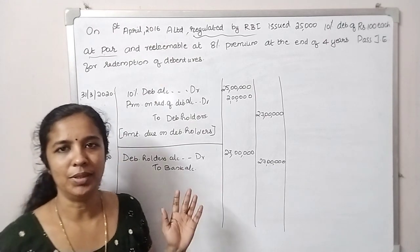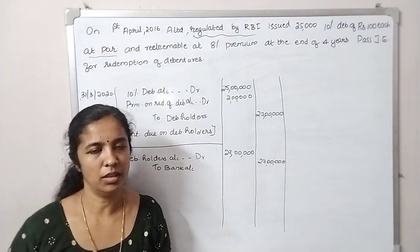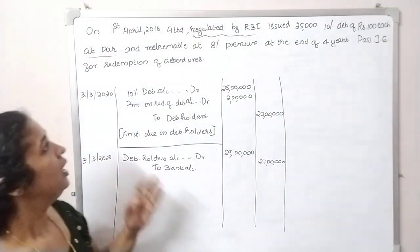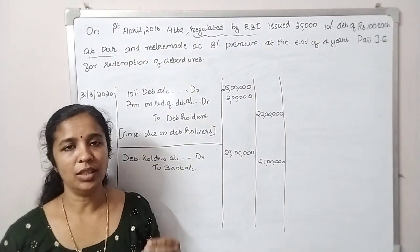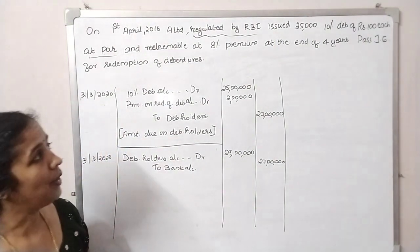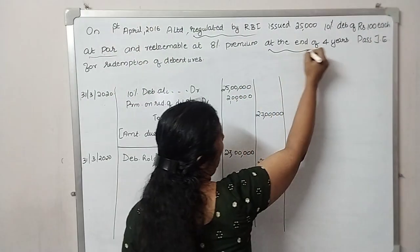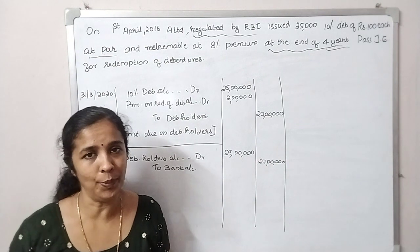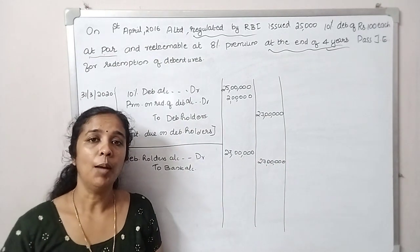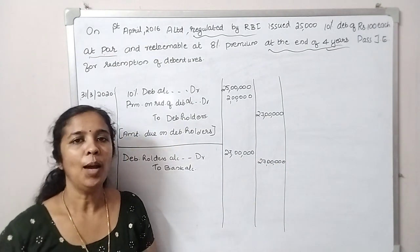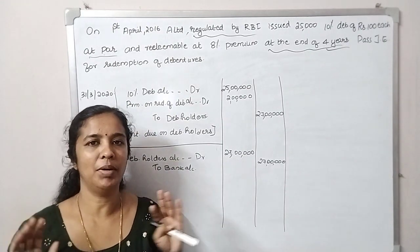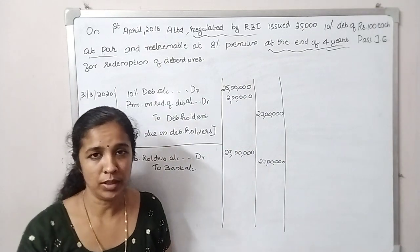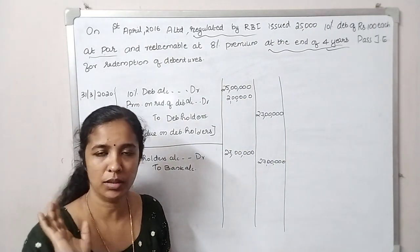This question is under redemption of debentures. So, if you are issued 25,000 debentures of Rs. 100, that is the payment you have already made. At the end of 4 years, the repayment is due. If you want to get a debenture redemption, that is a lump sum method. In this lump sum method, there are out of capital and out of profit.